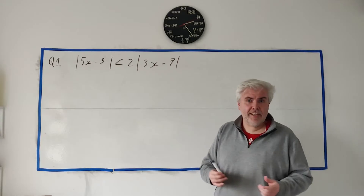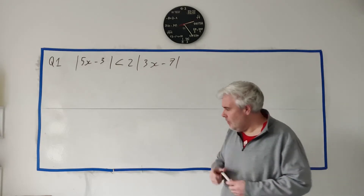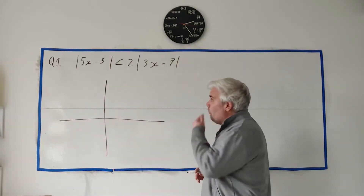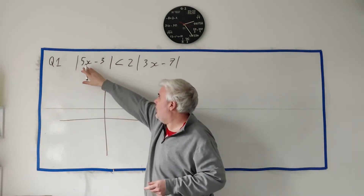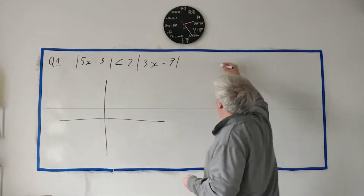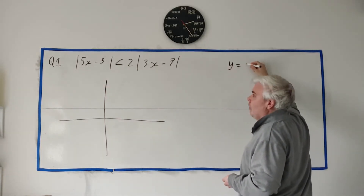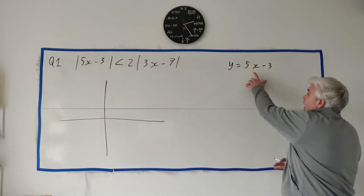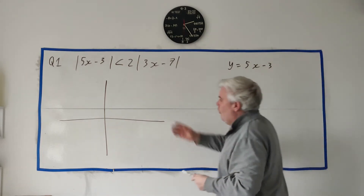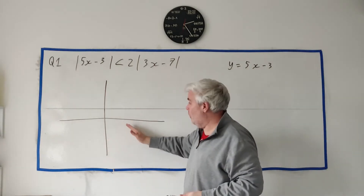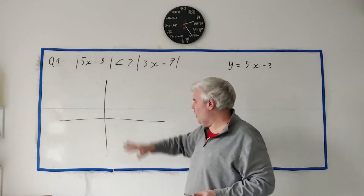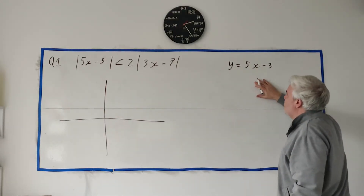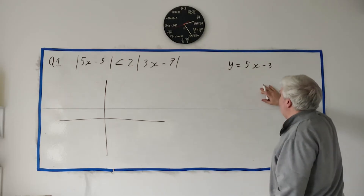It's actually, once you get good at it, a lot easier I believe. So let's start by drawing an xy-axis. To draw the left side, we're going to start by treating it as y equals 5x minus 3, and when it goes below the zero axis we're going to invert it and bounce it up. We're going to do it all quite roughly.